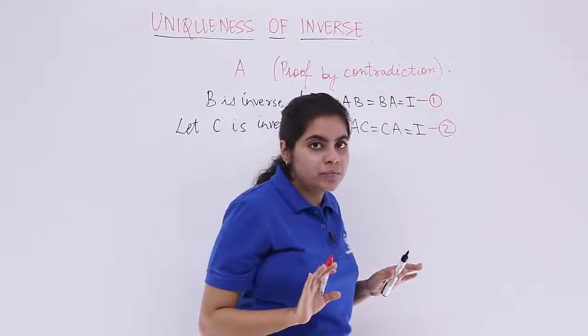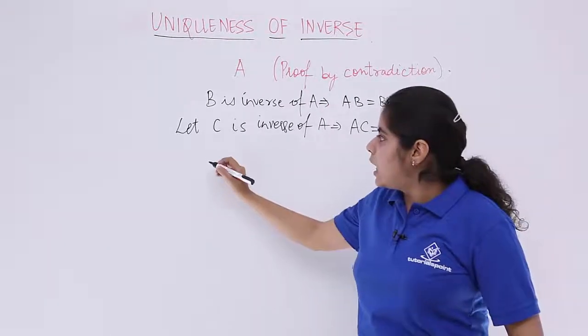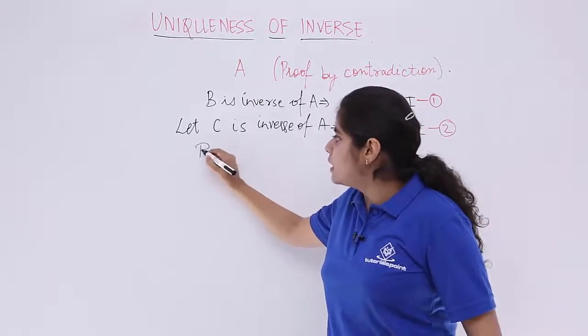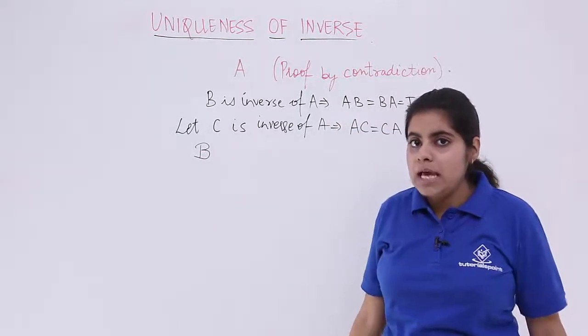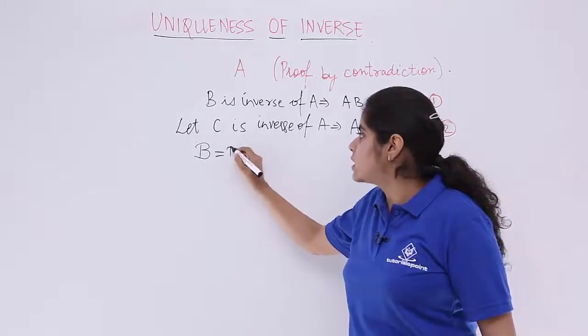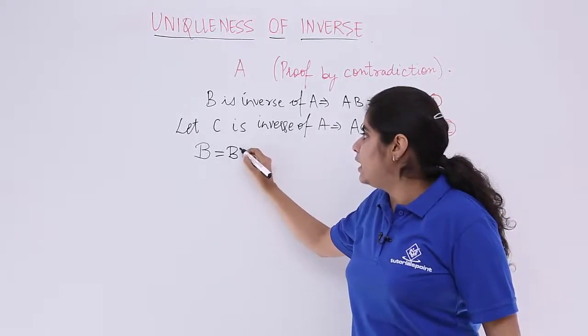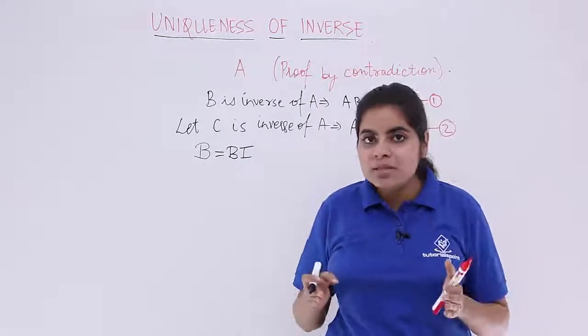Now suppose I need to think what is my matrix B. My matrix B is actually the product of B and the identity matrix, because you already know any matrix multiplied by identity does not change its statement and the elements.